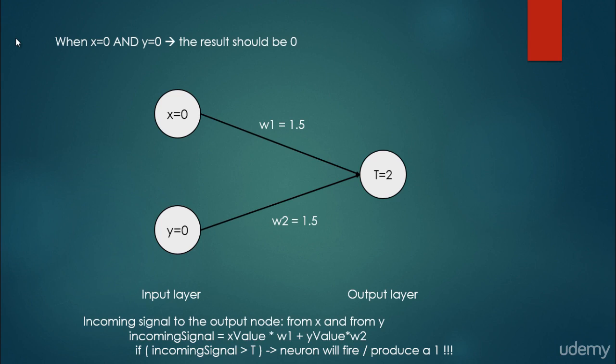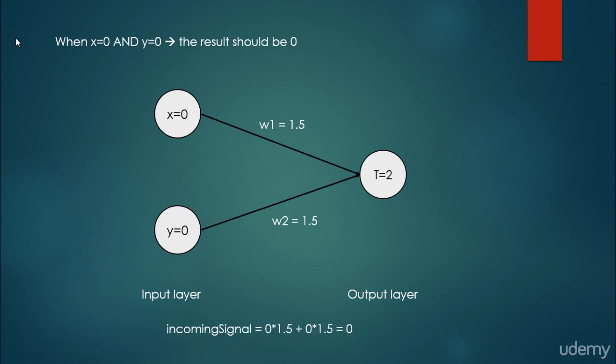If the incoming signal is greater than the threshold of the output neuron, then the neuron will fire, meaning it produces 1. If it does not fire, it produces 0. So let's calculate: the incoming signal is 0 times 1.5 plus 0 times 1.5, which equals 0. And because 0 is less than the threshold of 2, it is going to produce 0.